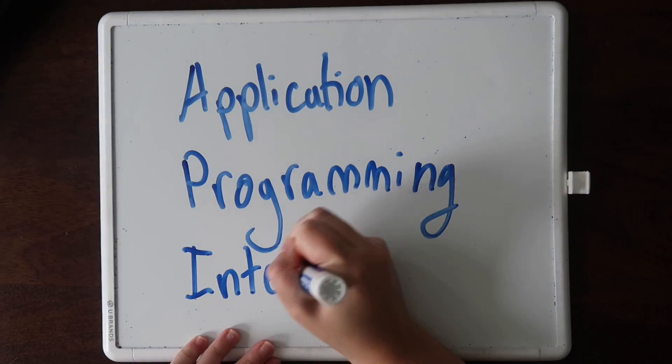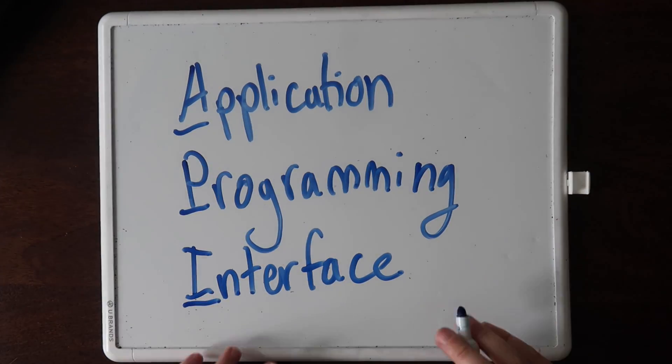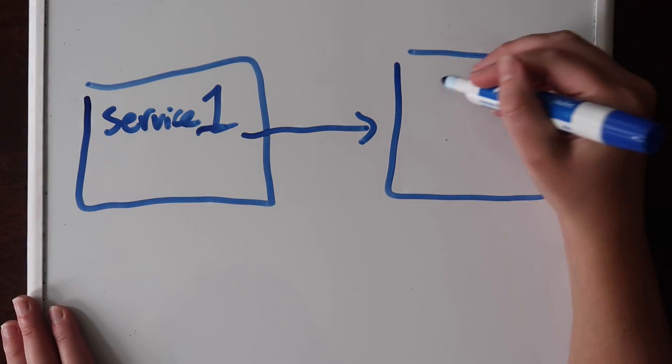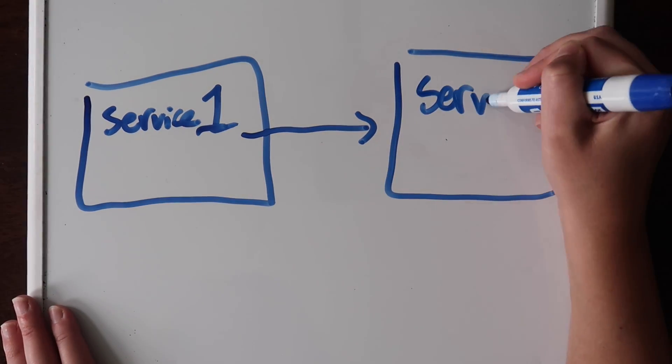API stands for Application Programming Interface. It's an interface between an application and other applications that want to communicate with it using programming. They're used everywhere, from social media integrations to e-commerce, so if you're a student, it's really important to understand what these are and how they work. No matter what your job ends up being in tech, you're probably going to use APIs.